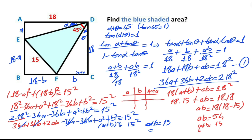Now we know a plus b equals 15 and ab equals 54. First case: if a equals 6, then b equals 9. Second case: if a equals 9, then b equals 6.